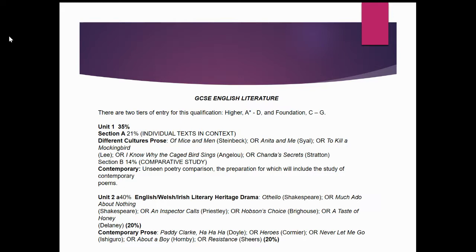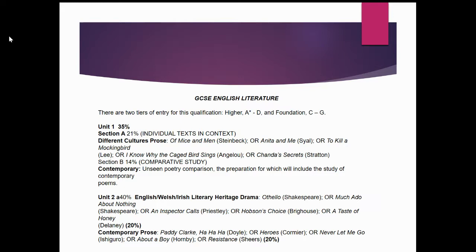For your GCSE English Literature course, this runs alongside your language, and over the course of two years you study both language and literature. In Year 10, you'll be studying for Unit 1, which is 35% of your final grade. As a centre, we've chosen to read Of Mice and Men as our main text, as well as Unseen Poetry for the Section B part of the exam. You'll complete this at the end of Year 10, in May.